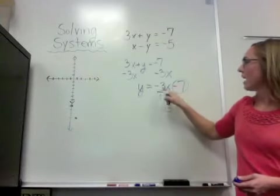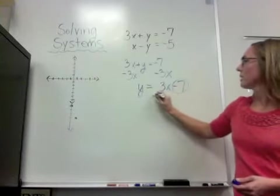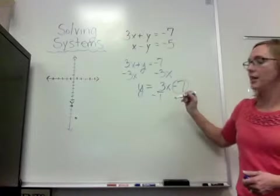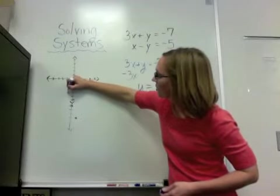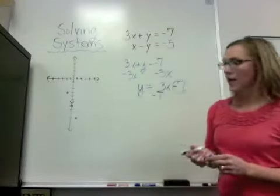My other option is if you know, if I put the negative down here, I still have negative 3. So I could go up 3, rise 3, and move in the negative direction 1. Either way, I make a nice line.